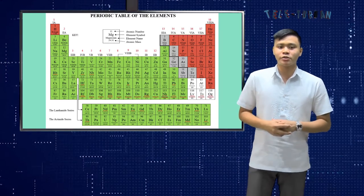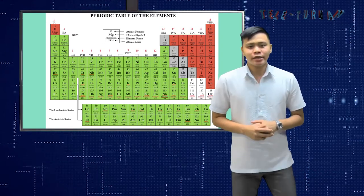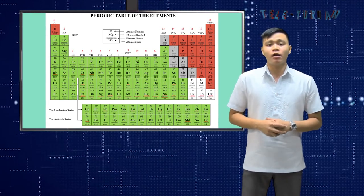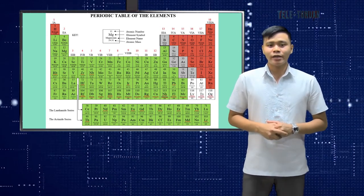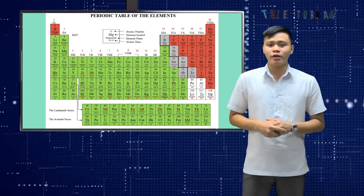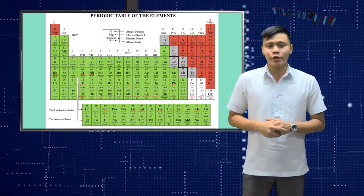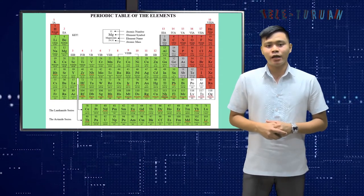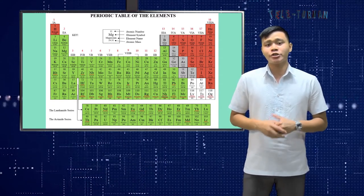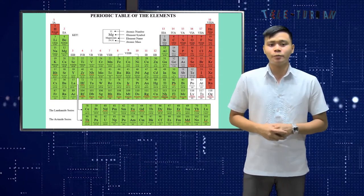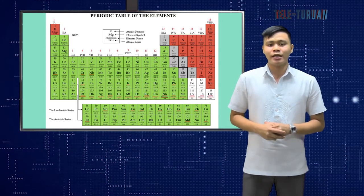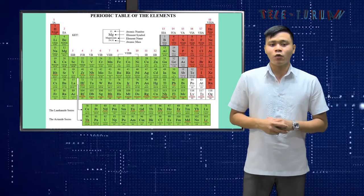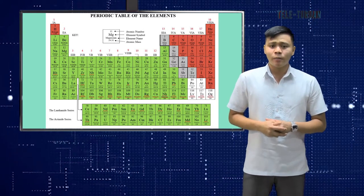Starting on the left of the periodic table, we see groups labeled 1A, 2A, 3B, and so on. On some newer versions of the periodic table, the groups are numbered 1 to 18. I will use the older version and show the new group numbers in parentheses. The elements in any particular group tend to form ions with characteristic charges. Please note, some elements are capable of having a range of electrical charges and therefore form different ions.